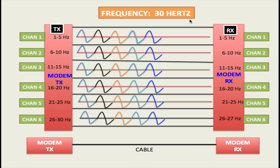We're going to be using 30 hertz — just 30 hertz for simplicity. Normally the frequency is much higher for a DSL line or cable line, but I'm using 30 hertz here to keep it simple. This 30 hertz will be broken down into channels from channel 1 to channel 6, with 5 hertz in every channel: 1 to 5 in the first, 6 to 10 in the second, channel 3 is 11 to 15, then 16 to 20, 21 to 25, and finally channel 6 has 26 to 30 hertz being transmitted from one modem to the other.